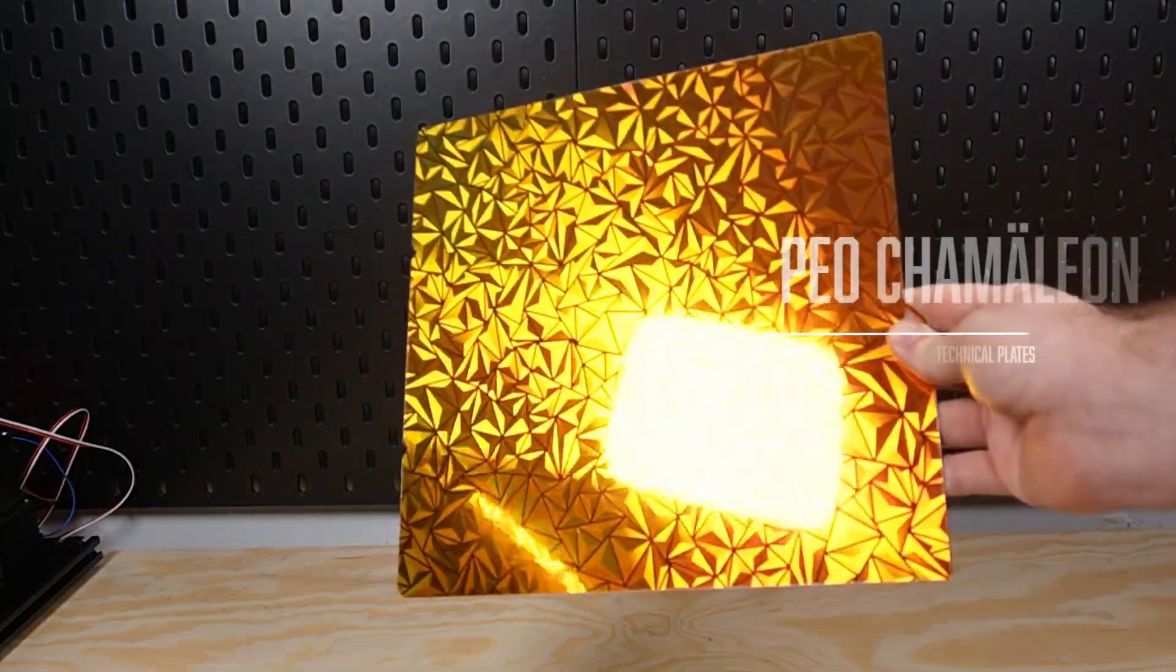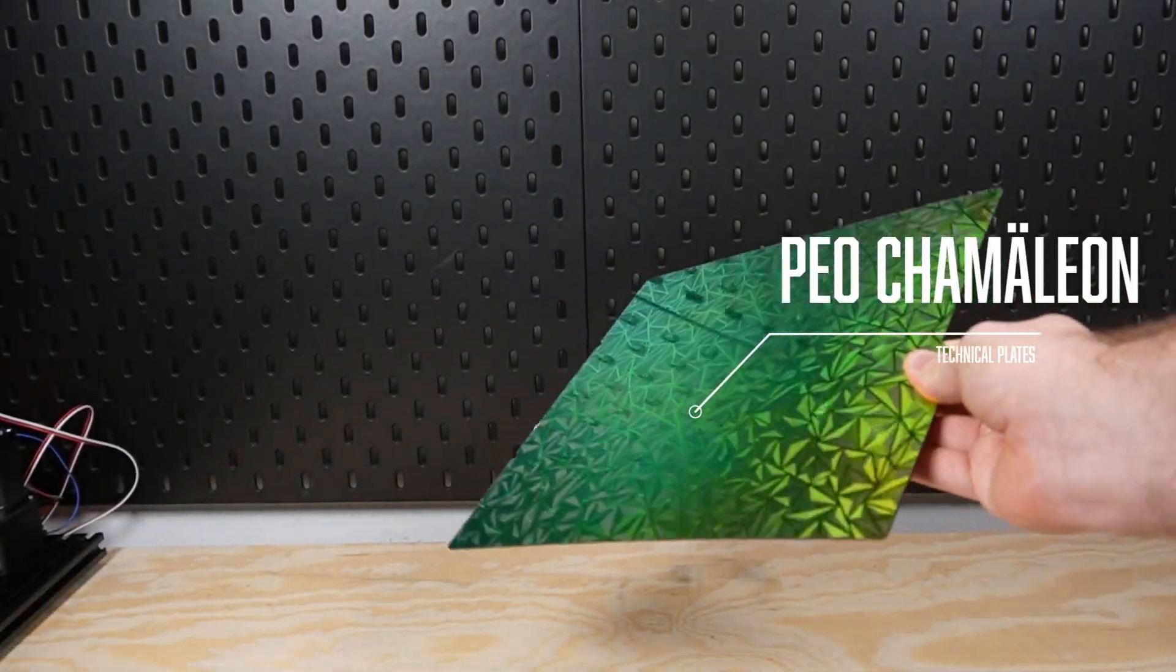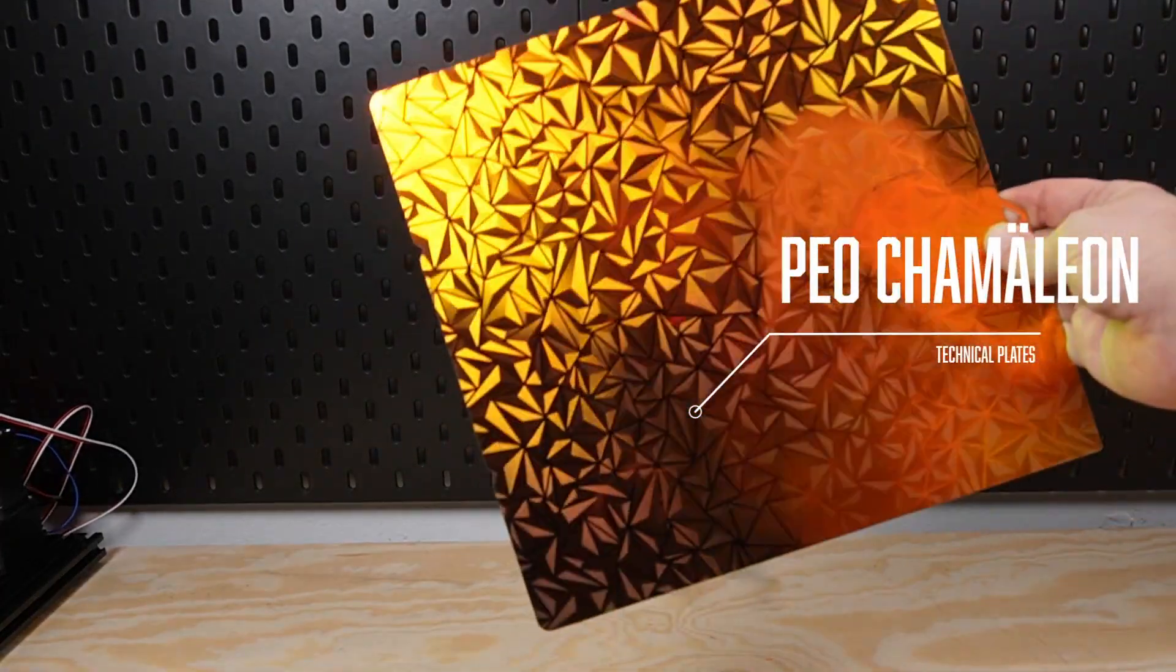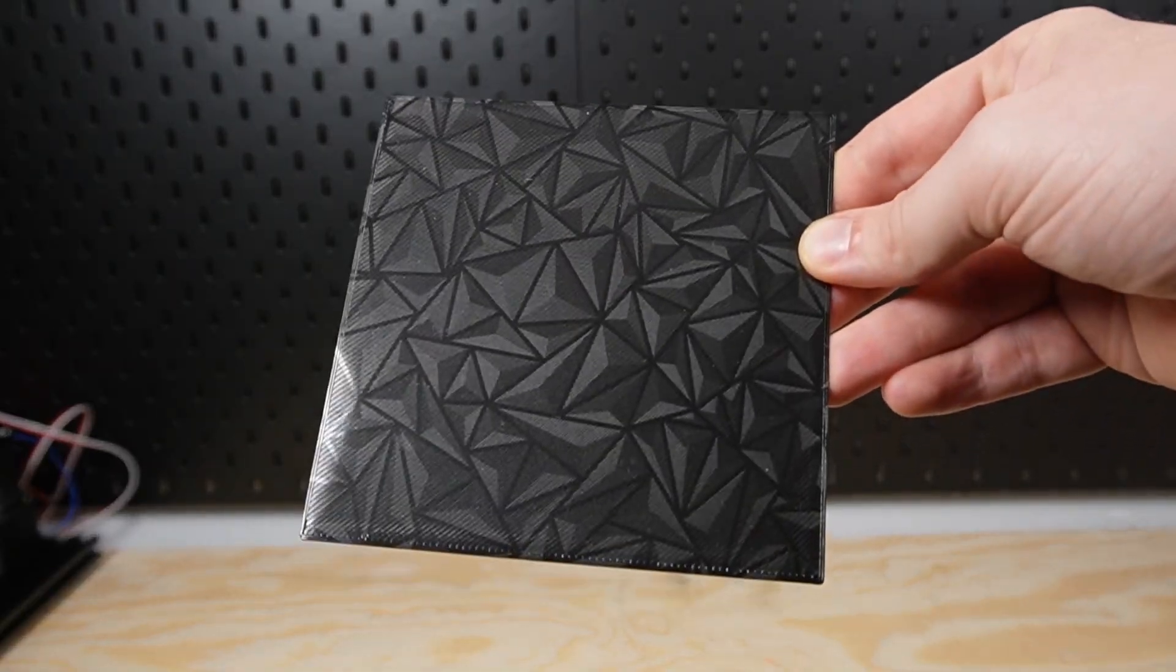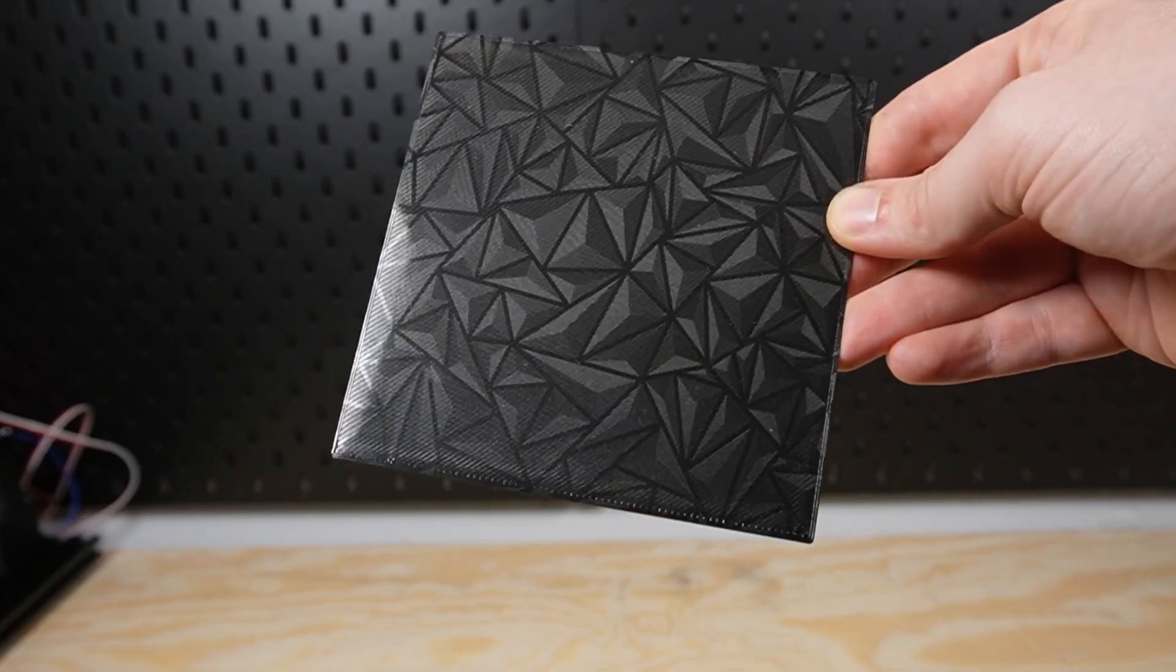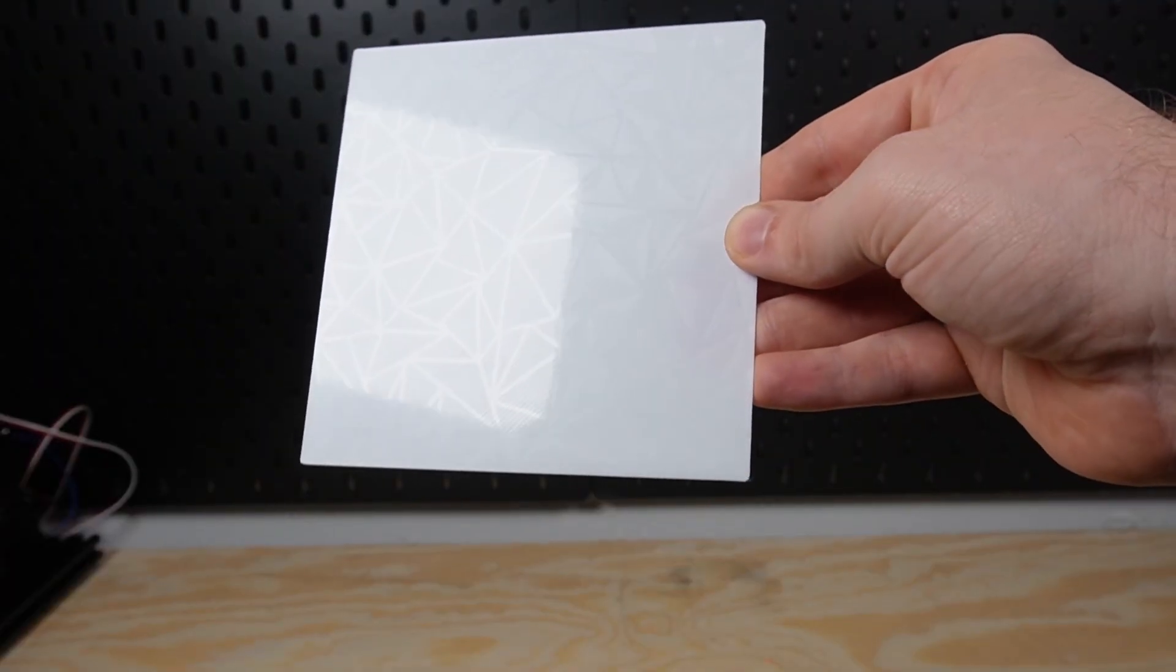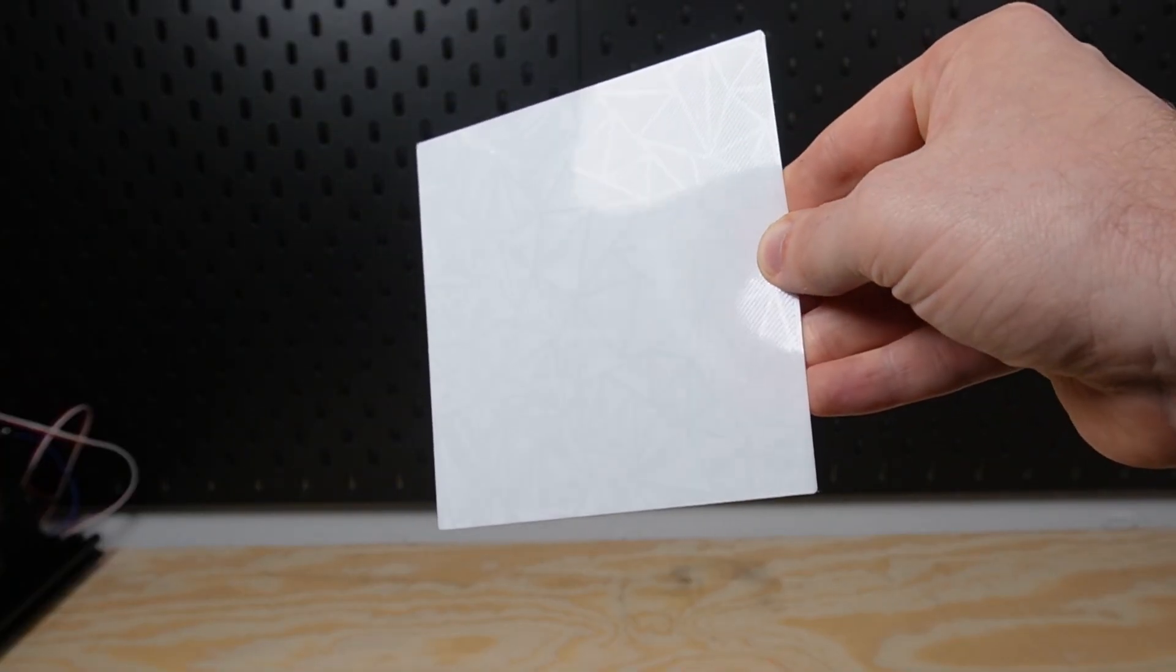On the outside, this plate shimmers in all colors. But there's a small downside. The colorful shine stays on the plate. Your object only picks up the pattern: an etched, faceted grid. The result is a subtle, deep relief without a rainbow effect, which is ideal for minimalistic designs or premium prototypes, where you want a noble texture, but not a loud color shift.